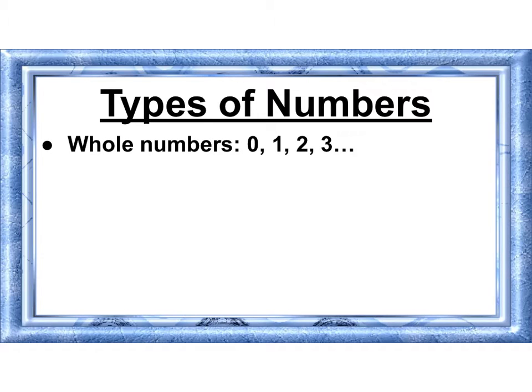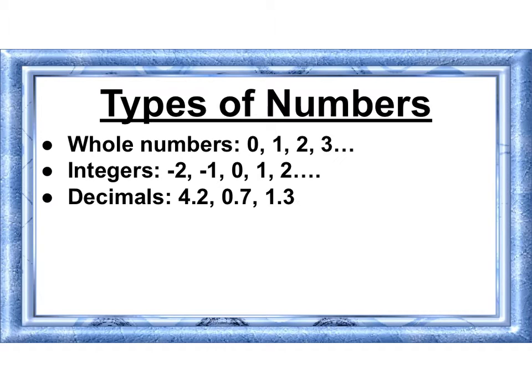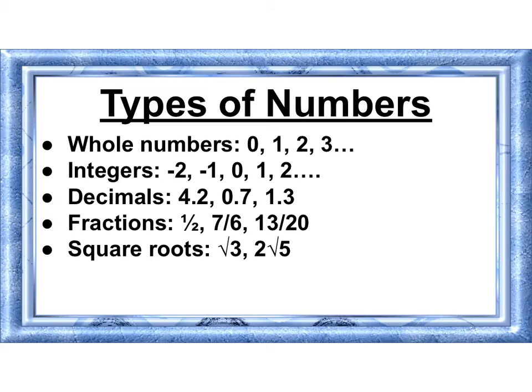Look at types of numbers. We have whole numbers, we have integers which now include our signs, decimals, fractions, square roots like the square root of 3 and 2 square roots of 5, and now we're going to learn about imaginary numbers: i, 2i, negative 6i, 4 fifths i, i square roots of 3.